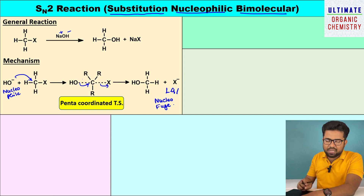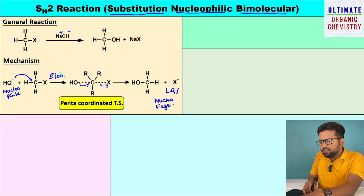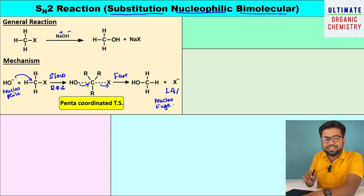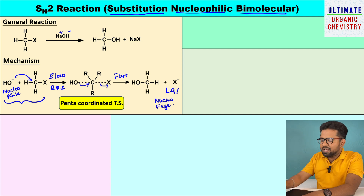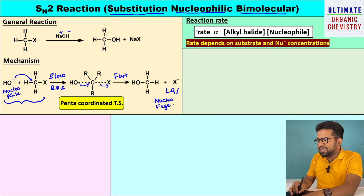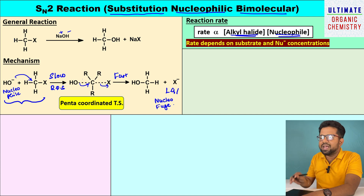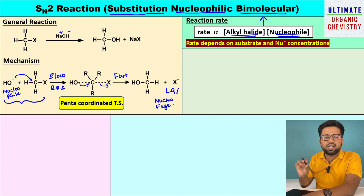Looking at the rate of the reaction: the formation of the penta-coordinated transition state is the slow step and the rate-determining step, while the second step — formation of product — is the fast step. The rate-determining step contains both the nucleophile and the alkyl halide. Therefore, the rate of SN2 reaction is directly proportional to the concentration of alkyl halide and the concentration of nucleophile. Since two molecules are involved, we call this reaction bimolecular.